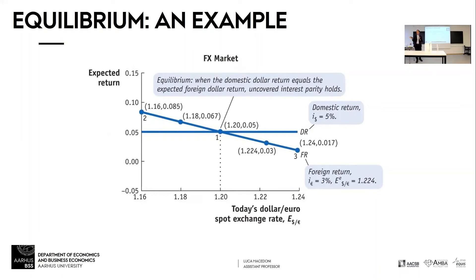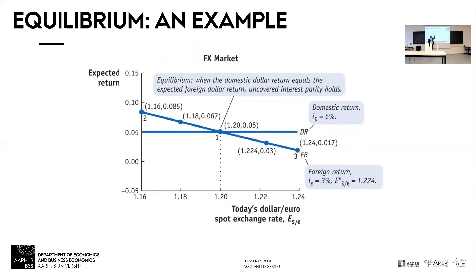Why is that? When you're an American investor and you buy euro bonds, your return is highest the more the dollar depreciates, because you're going to receive euros. So the more the dollar loses value vis-à-vis the euro, the higher your return. Conversely, the more the dollar has already depreciated today, the lower the future depreciation that's going to happen. This is what this figure is telling us. And when the two returns are equal to one another, we find today's spot exchange rate — where the domestic return also equals the foreign return.